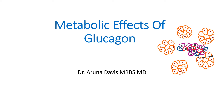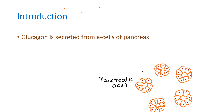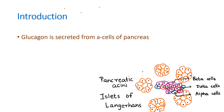In this video we are going to discuss the metabolic effects of glucagon. Glucagon is a hormone secreted from the alpha cells of the pancreas. The pancreas contains an exocrine part, which includes the pancreatic acini, and also an endocrine part which has the islets of Langerhans, containing alpha, beta, and delta cells. Glucagon is produced from the alpha cells of the islets of Langerhans.